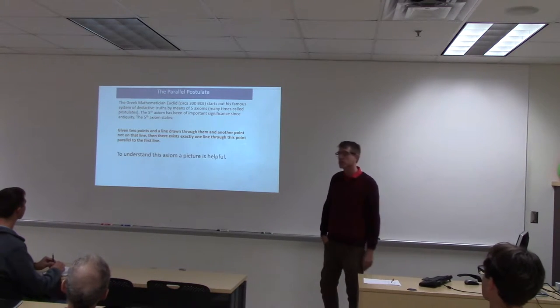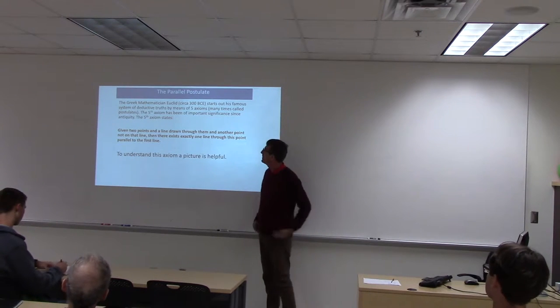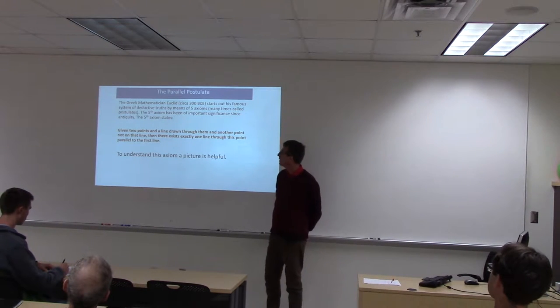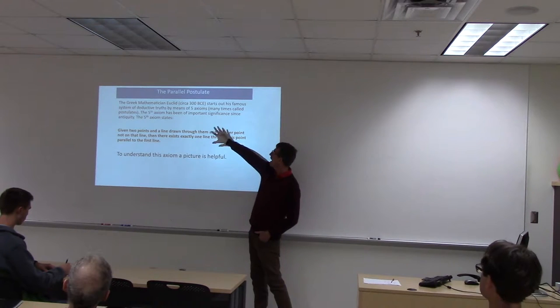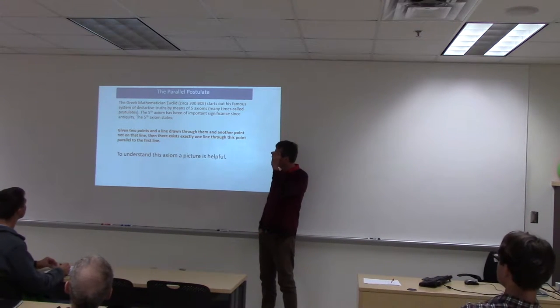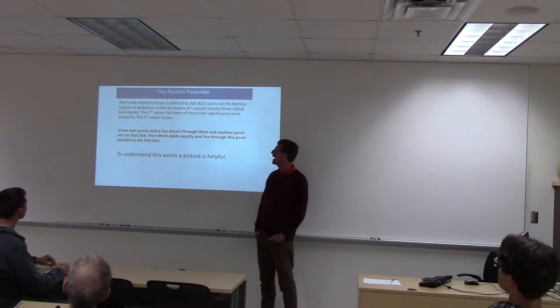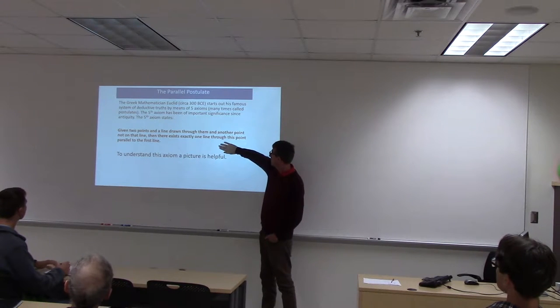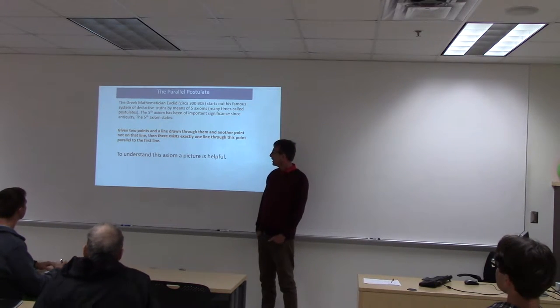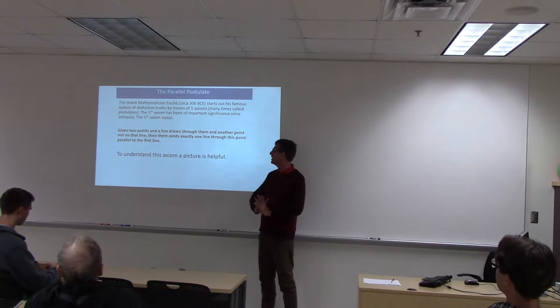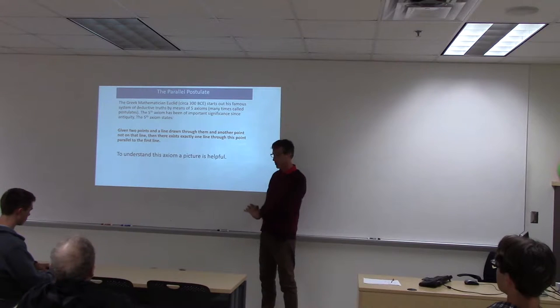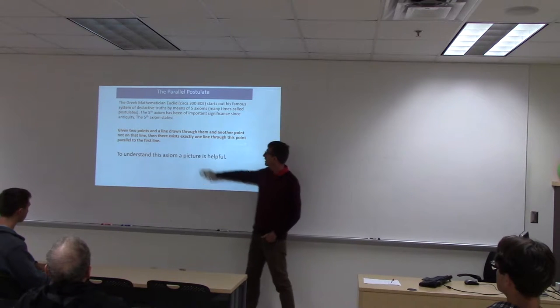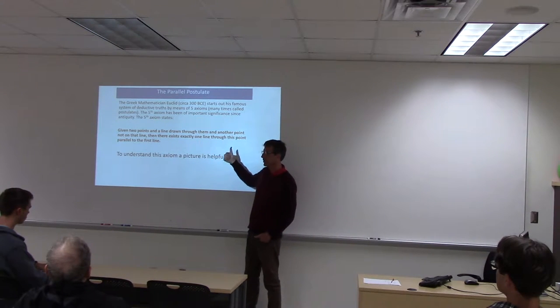There's something even more interesting in this because this picture is due to our concept of gravity, and there's something else going on with gravity these days that makes all of these questions really interesting, especially with respect to the next problem I'm going to show you. So it's called the parallel postulate. The Greek mathematician Euclid starts out his famous system of deductive knowledge in the elements by means of five axioms. The fifth axiom has been of important significance since antiquity. And this is the version of the axiom: given two points and the line drawn through them, and another point not on that line, there exists exactly one line through this point parallel to the first line.